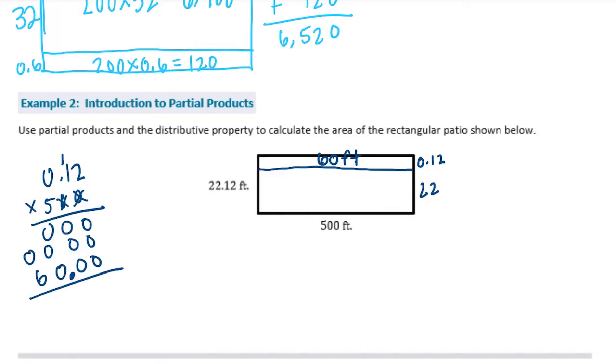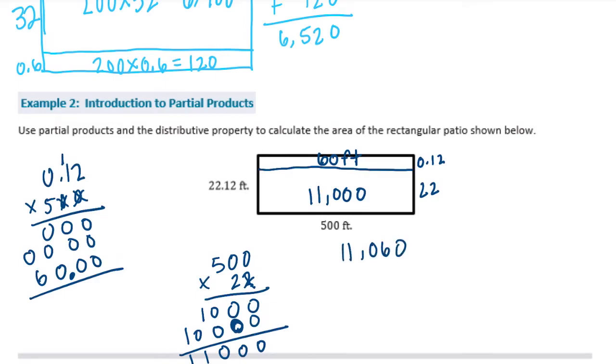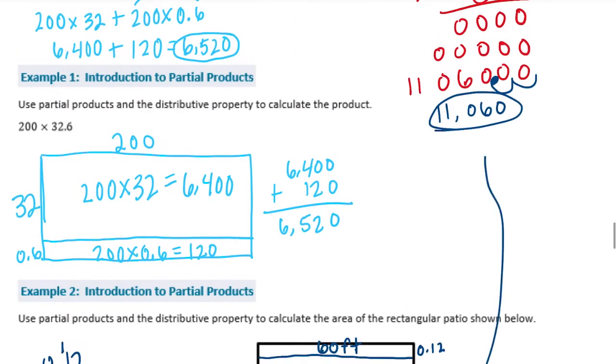Then 22 times 500: 0 times 2 is 0, it's going to be the same thing with the 0's. 5 times 2 is 10. Add them together and we get 11,000. If we add those together, we get 11,060, which matches our answer up here.